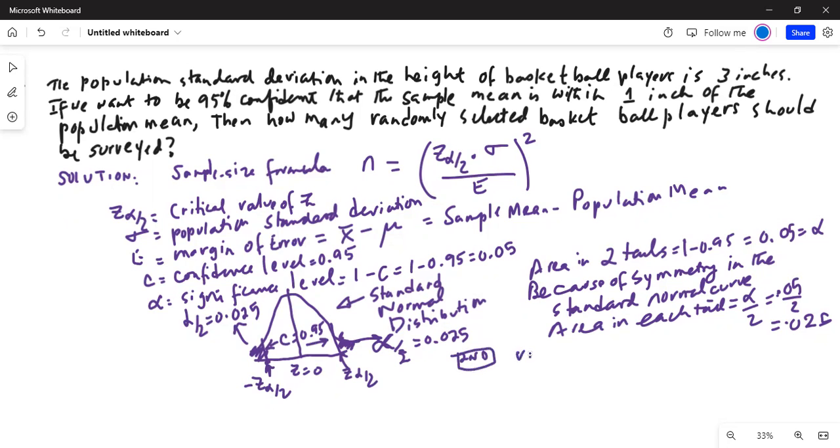Go to press second, then inverse, then scroll down to inverse normal. Type for area in the left tail as 0.025. This is a standard normal curve; the mean is 0, sigma is 1. Paste means enter and enter.